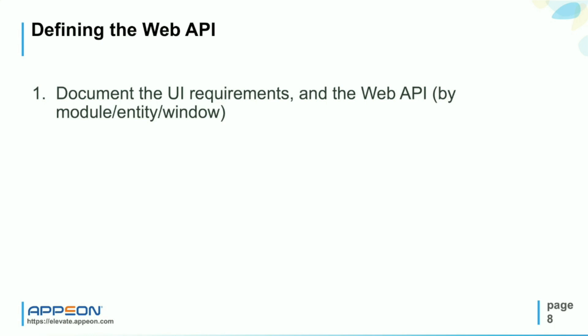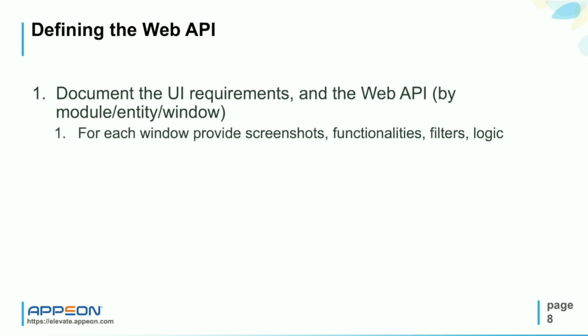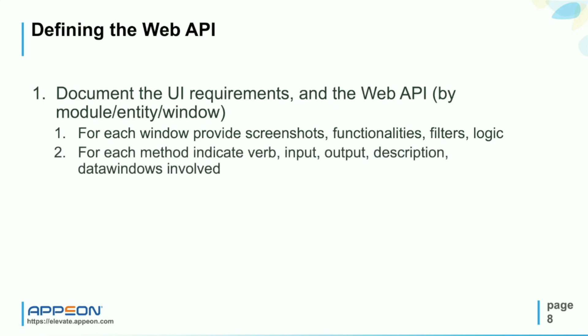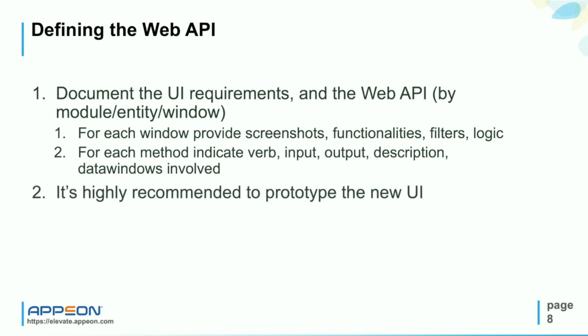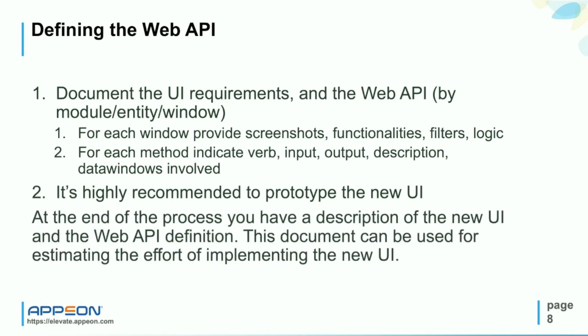Let's see in detail. First, document the UI requirements and the Web API by module, entity, or window. For each window, provide screenshots of the existing interface, functionalities, filters and logic. For each method, indicate the verb, the input, the output, description, and the DataWindows involved. It is highly recommended to prototype the new interface. At the end of this process, you have a description of the new UI and the Web API definition — a document that can be used for estimating the effort of implementing a new UI.